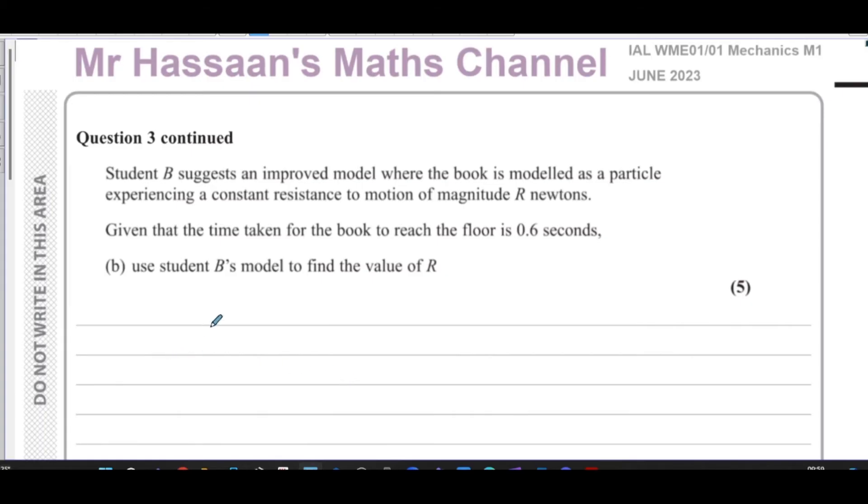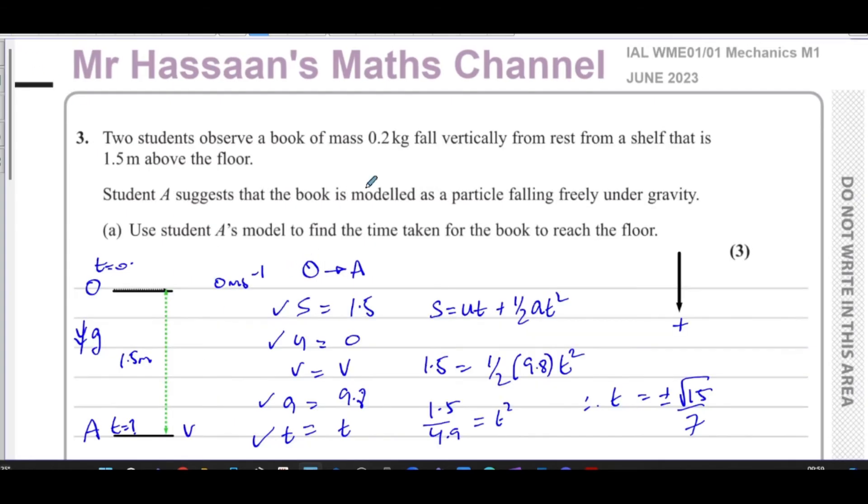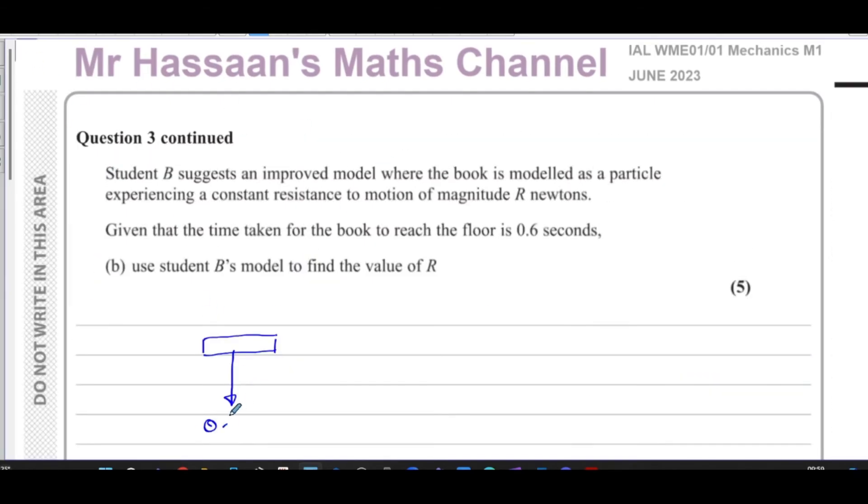So now we have to consider the forces acting on this mass. So we're going to have the book, which actually doesn't draw the book. Just draw something that looks like this. So we got the book. You have the weight of the book, which was, as we said, I think 0.2 kilograms. So that's going to be 0.2 G newtons. That's the weight. But now you have the air resistance, which is R. So you got the air resistance and the weight now of the book, which are going to act on this book.